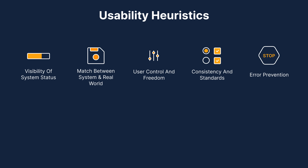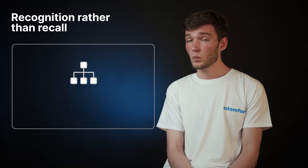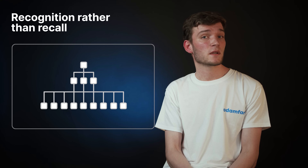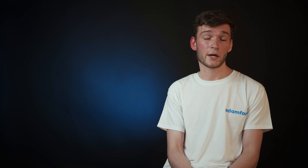Heuristic number five is error prevention. Mistakes are inevitable, but it's the job of a designer to minimize the number of them. Heuristic number six is recognition rather than recall, which means that users should be able to interact with the system without prior information or context. We can't be bothered to memorize every single button or action. Users have to be able to recognize patterns with little to no prior preparation.